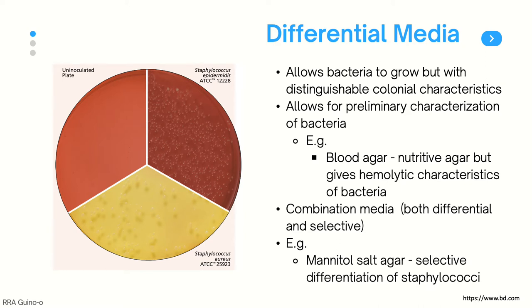Then we also have combination media. These are media that are both differential and selective. One example is mannitol salt agar, which is used for the selective differentiation of staphylococci, as you can see on the left. The different quadrants have different species of staphylococcus. Mannitol salt agar is used to preliminarily identify Staphylococcus aureus, which turns the agar yellow, like you can see on the bottom, while other species of staphylococcus only produce colorless to white colonies. Note that this agar contains a very high salt content, which inhibits the growth of most bacteria while allowing for growth of staphylococcus.